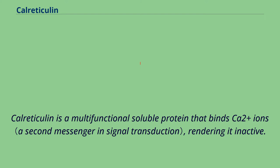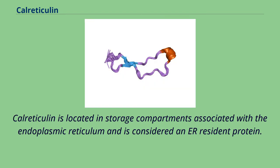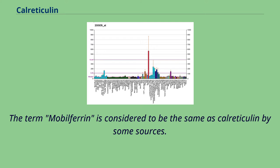Calreticulin is a multifunctional soluble protein that binds Ca2+ ions, rendering it inactive. The Ca2+ is bound with low affinity but high capacity, and can be released on a signal. Calreticulin is located in storage compartments associated with the endoplasmic reticulum and is considered an ER resident protein. The term mobilferrin is considered to be the same as calreticulin by some sources.